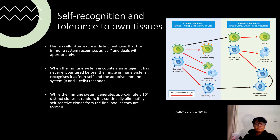Transplantation is the process of transferring cells, organs, or tissues from one location to another, often between individuals. This procedure is used to treat an organ system's malfunction — such as kidney, liver, heart, or lung — by replacing the diseased organ with a healthy donor organ. The immune system, on the other hand, is a significant obstacle to transplantation as a standard medical procedure.